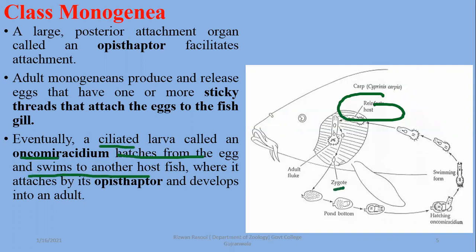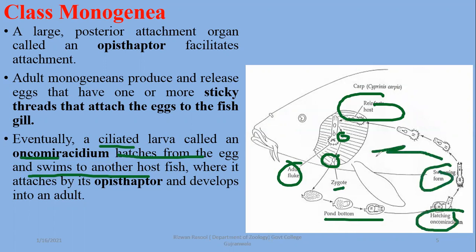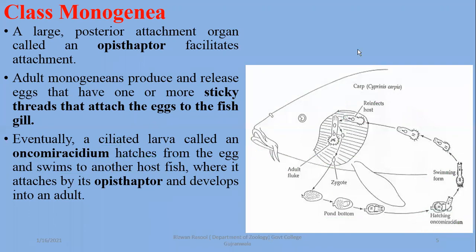In this diagram you can see the zygote formation, the eggs, and the adult fluke. The zygote will ultimately develop, and after settling at the pond bottom, the free-swimming larval stage will find a suitable host again — that is usually a fish gill filament.